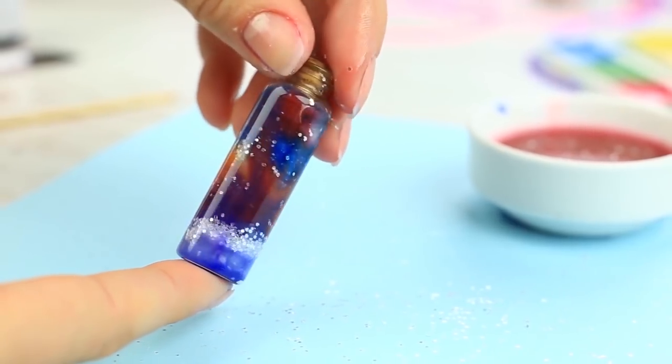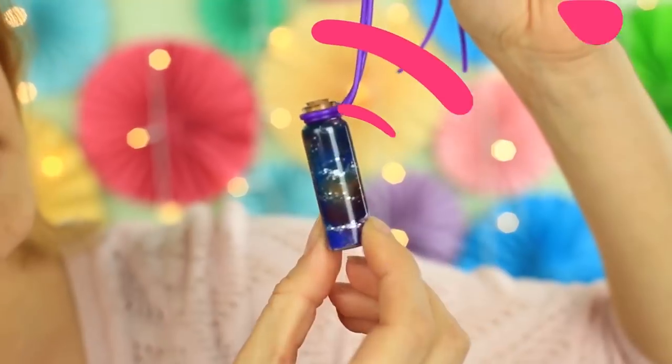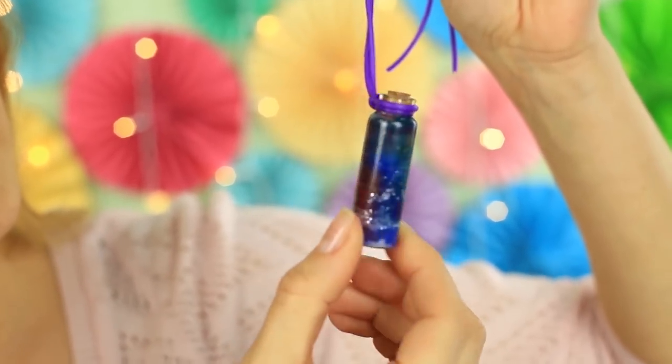Cork the vial. The space bottle necklace looks the most magical of all the others. The glycerin prevents mixing the color layers.